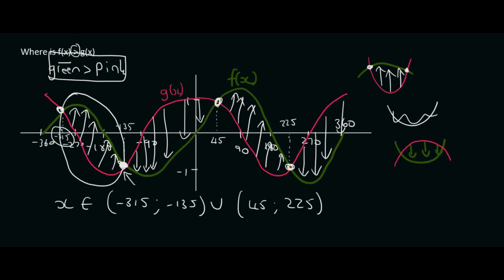Why did we not include these points? Why are we using round brackets at each of these boundary positions? Because at those individual dots, the green graph is not above the pink graph — at those points the two graphs are exactly the same. So we can't say that one is above the other. They strictly asked us where the green is above, so that's why I didn't include the boundary points.